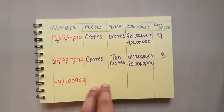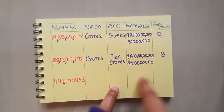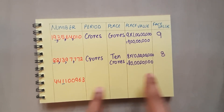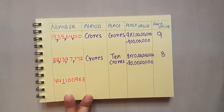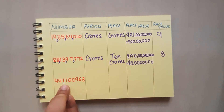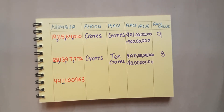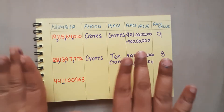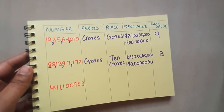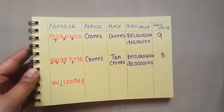This is a number for you, kids. You have to mark the periods and write the period, place, place value, and face value in the comment section — let me know the answer and I'll see whether you have understood or not.